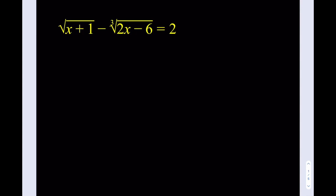Hello, everyone. In this video, we're going to be solving a very, very radical equation. So at this point, if you want, pause the video and try this problem first. We have the square root of x plus 1 minus the cube root of 2x minus 6 equals 2, and we're going to be looking for all possible solutions.